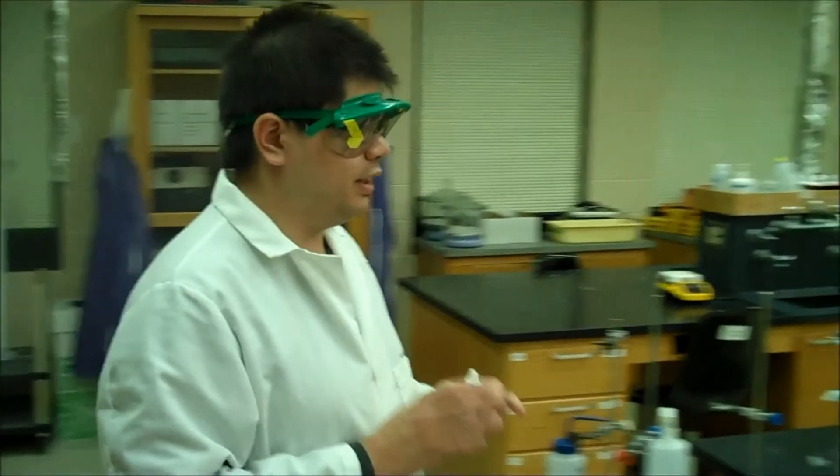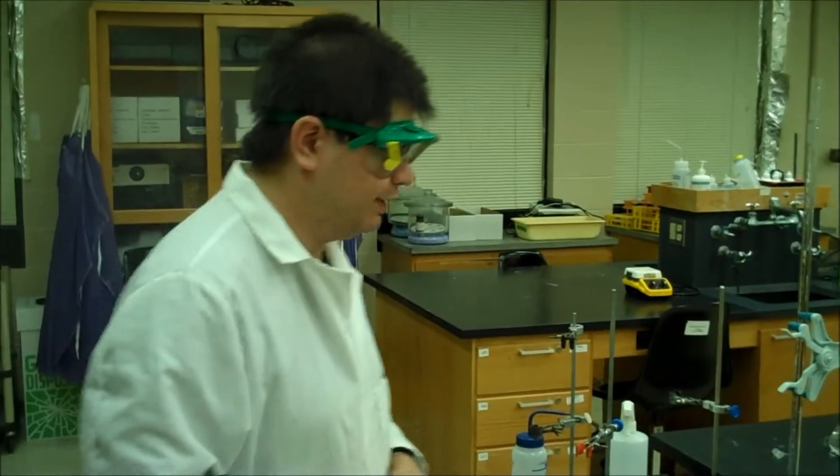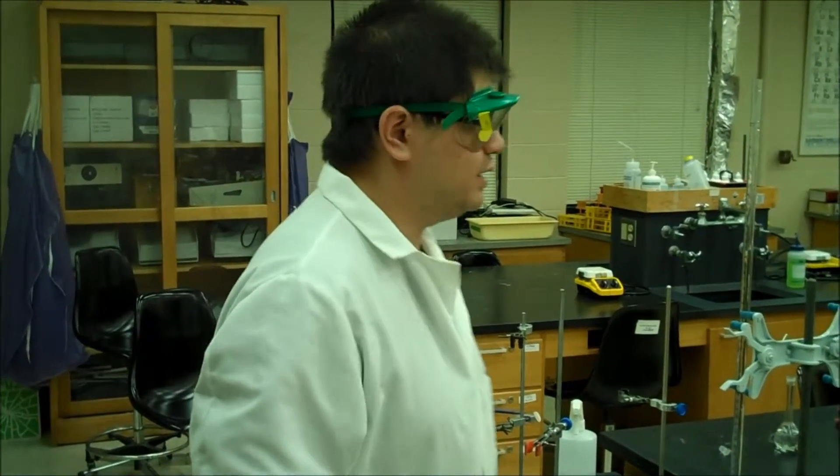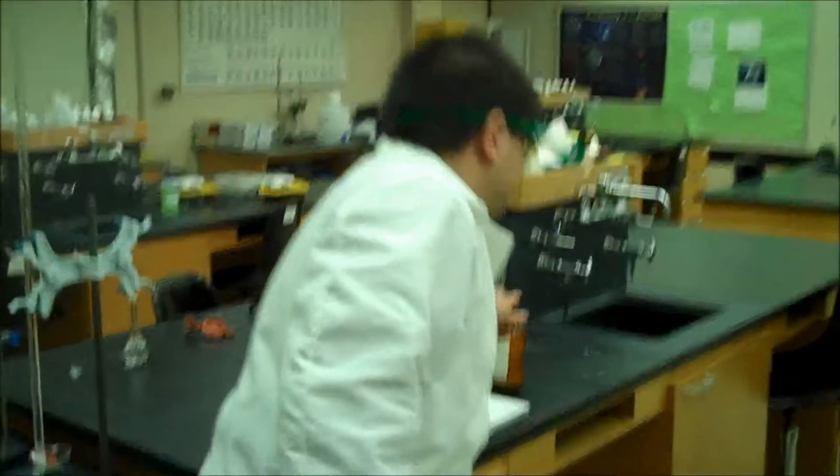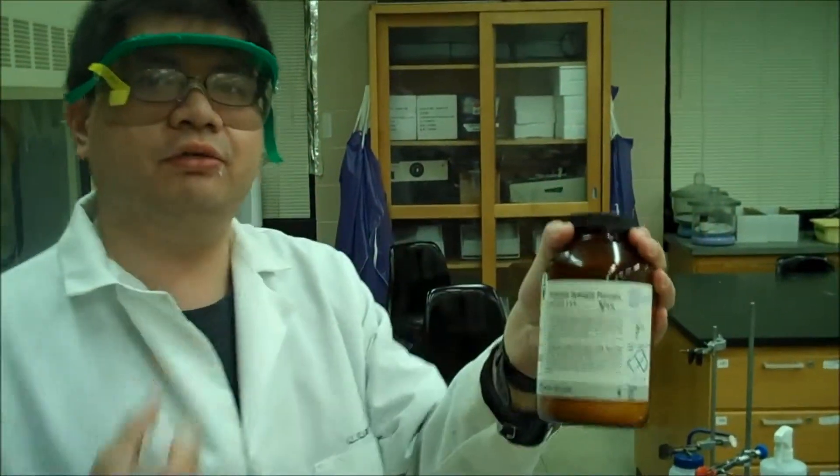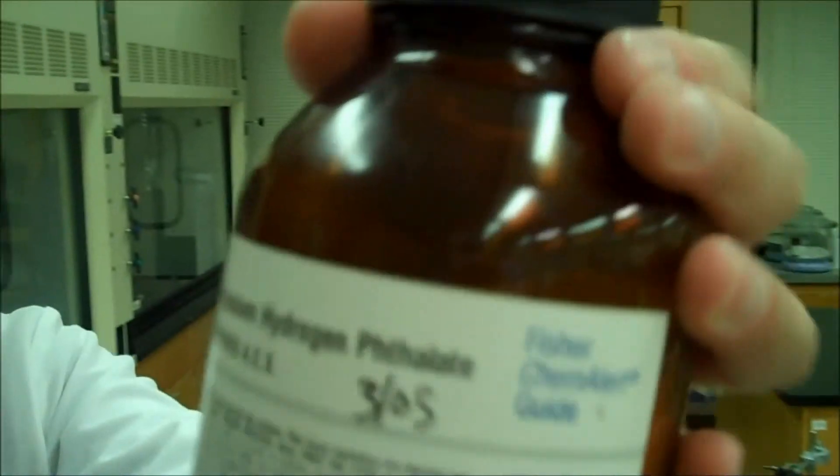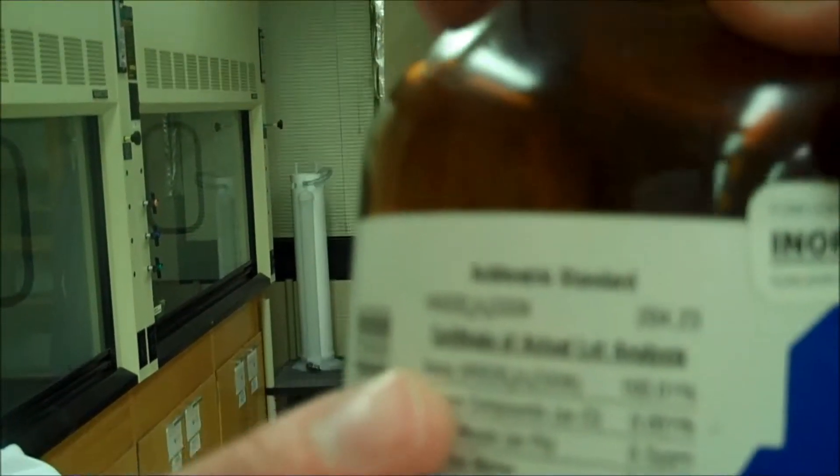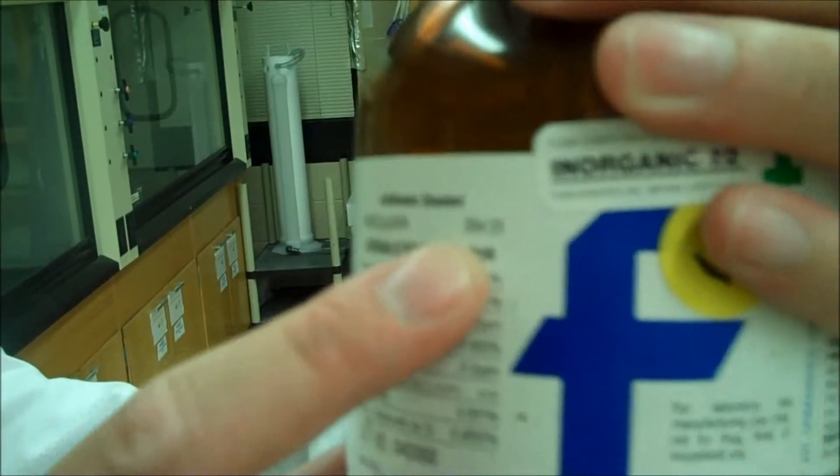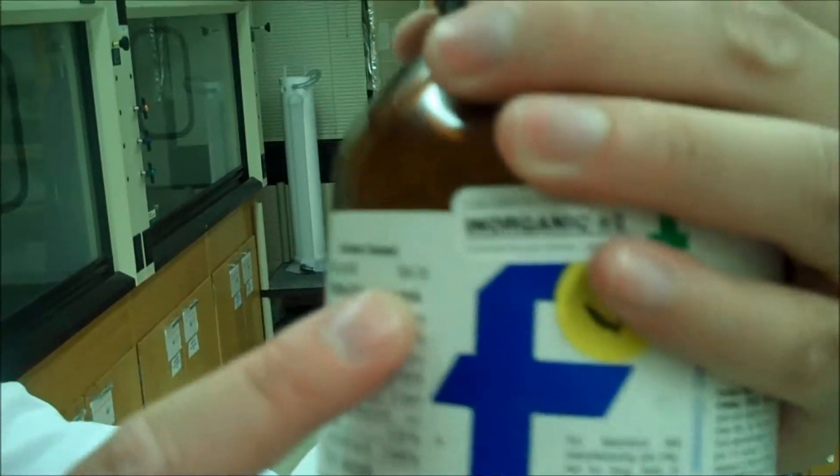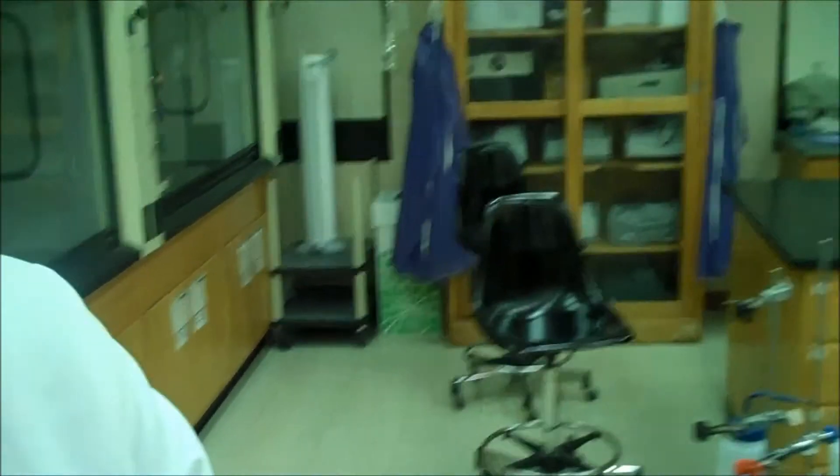So here we are going to do an acid-base titration. I've got potassium hydrogen phalate over here. This is our analyte. Note that this potassium hydrogen phalate, we quite often call it KHP, but in fact it is not KHP, and its molar mass is 204.2 grams per mole.